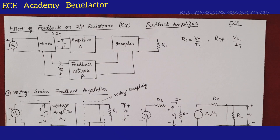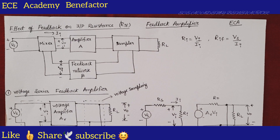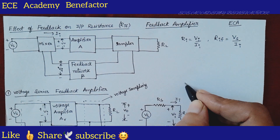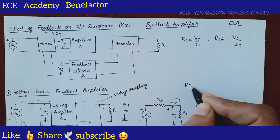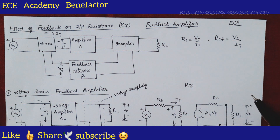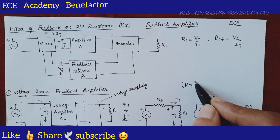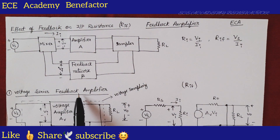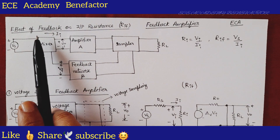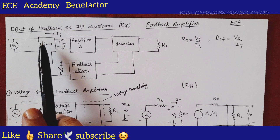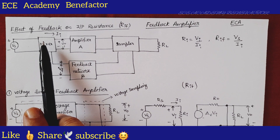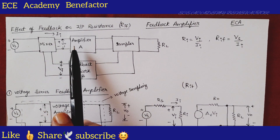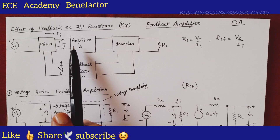Hello dear students, welcome to ECE Academy. In this class we will be seeing the derivation of Rif — input resistance with feedback — for a voltage series feedback amplifier. In our previous class we have seen the block diagram of a feedback amplifier, which is also known as a closed-loop amplifier.